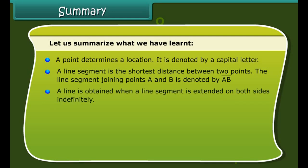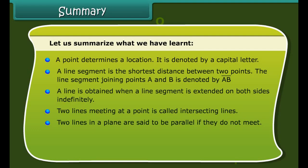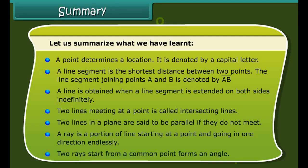Summary. Let us summarize what we have learnt. A point determines a location and is denoted by a capital letter. A line segment is the shortest distance between two points. The line segment joining points A and B is denoted by AB. A line is obtained when a line segment is extended on both sides indefinitely. Two lines meeting at a point is called intersecting lines. Two lines in a plane are said to be parallel if they do not meet. A ray is a portion of line starting at a point and going in one direction endlessly. Two rays start from a common point forms an angle.